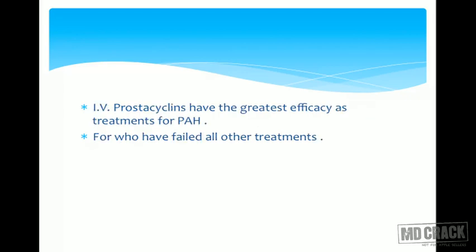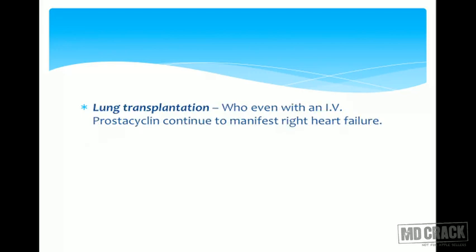The same applies to treprostinil. IV prostacyclins have the greatest efficacy as treatment for pulmonary arterial hypertension and should be reserved for patients who have failed all other treatments. Patients who fail even IV prostacyclins are candidates for lung transplantation — heart-lung, unilateral, or bilateral lung transplantation.